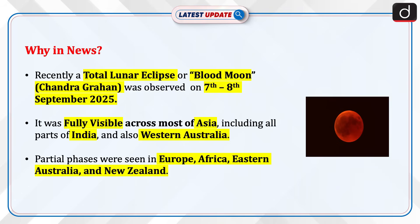Recently, a total lunar eclipse or blood moon was observed on the 7th to 8th of October 2025. It was fully visible across most of Asia, including all parts of India and also Western Australia. Partial phases were seen in Europe, Africa, Eastern Australia and New Zealand.